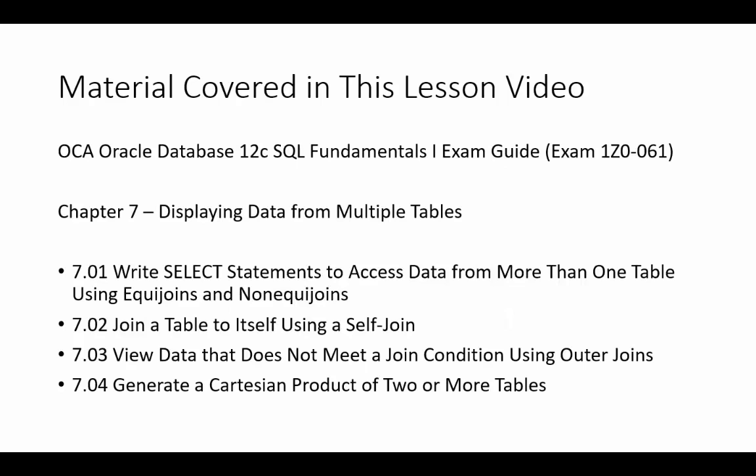Today we're going to cover Chapter 7: Displaying Data from Multiple Tables. We'll cover how to write SELECT statements to access data from more than one table using equi-joins and non-equi-joins, join a table to itself using a self-join, view data that does not meet a join condition using outer joins, and generate a Cartesian product of two or more tables.